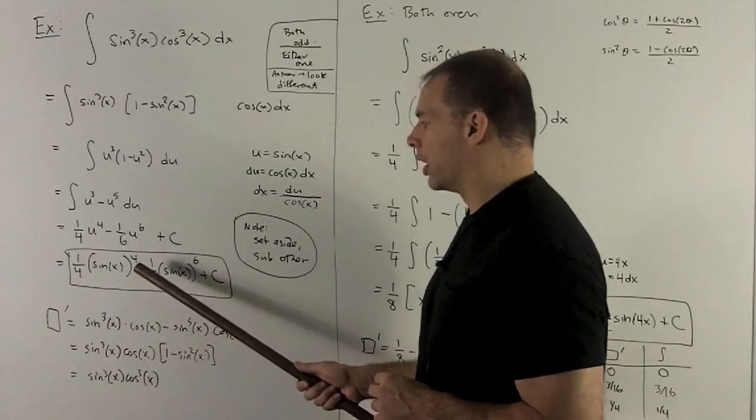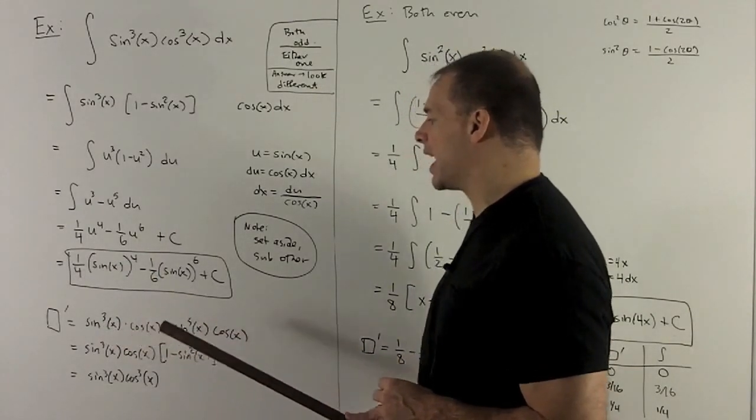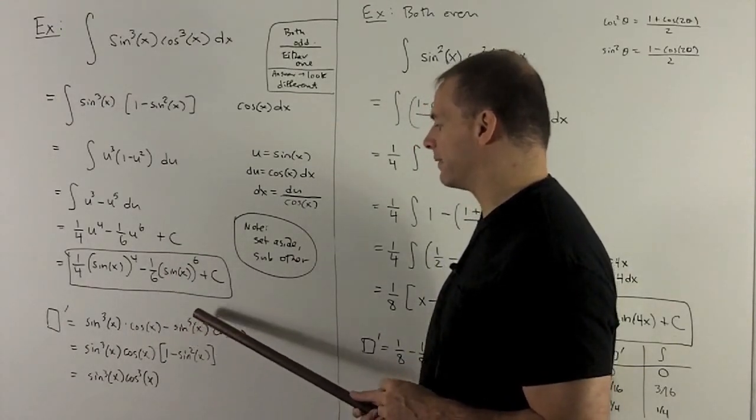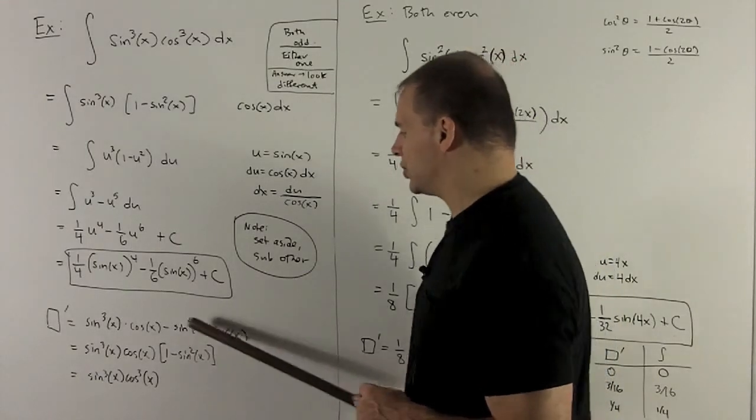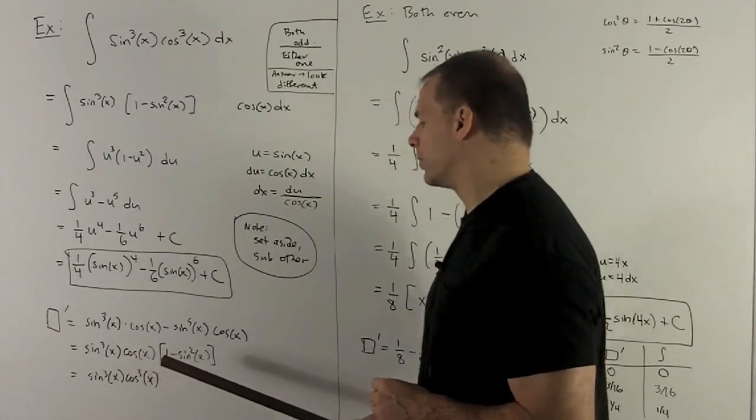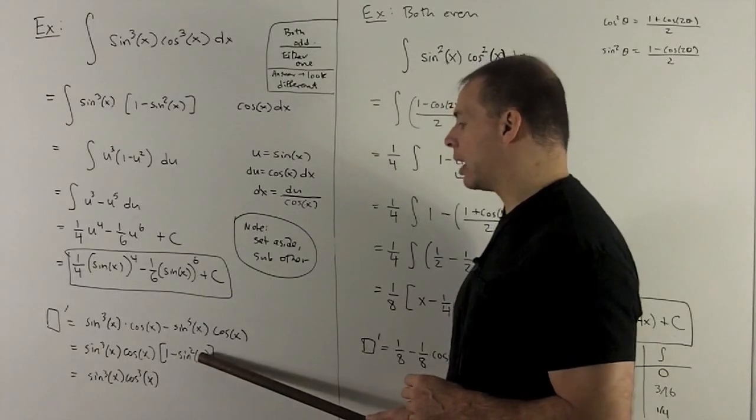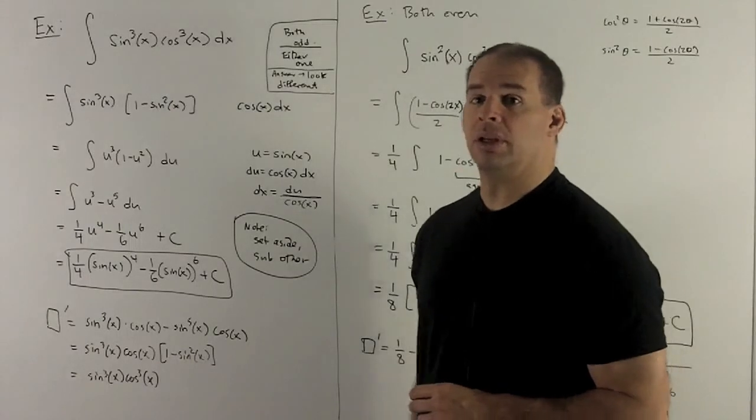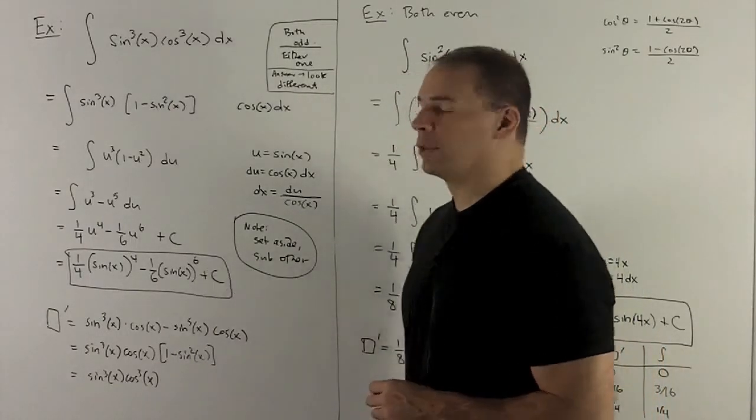We let u be equal to sine x. So 4 comes down, leaving me with a sine cubed. Derivative of the inside is just going to be cosine. And then minus 6 cancels, leaving me with a sine to the 5th. Derivative of the inside is cosine x. And now this is just collecting terms. Sine cubed comes out of both. Cosine x comes out of both, leaving me with a 1. And then there's a sine squared left over from there. That turns into cosine squared, leaving me with my sine cubed, cosine cubed. So this is the right answer.